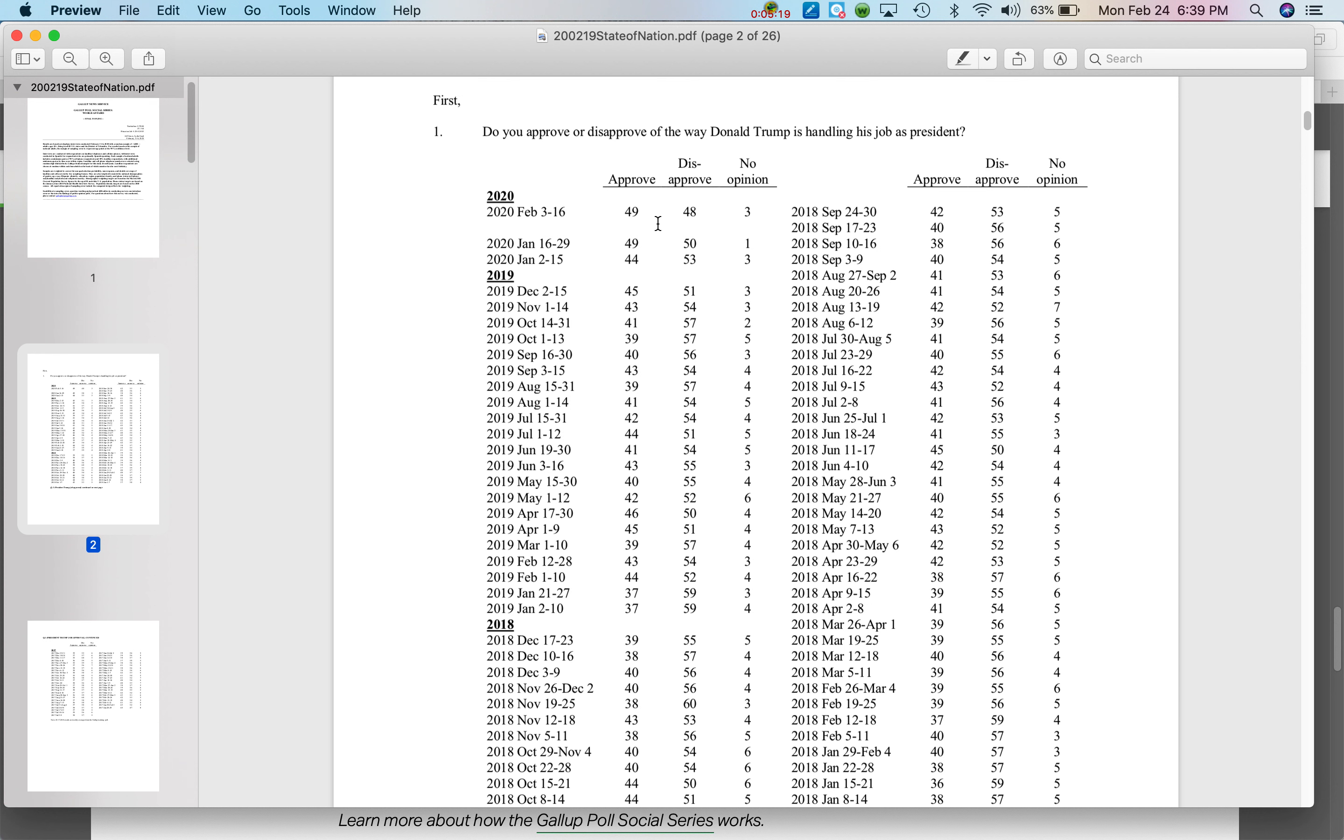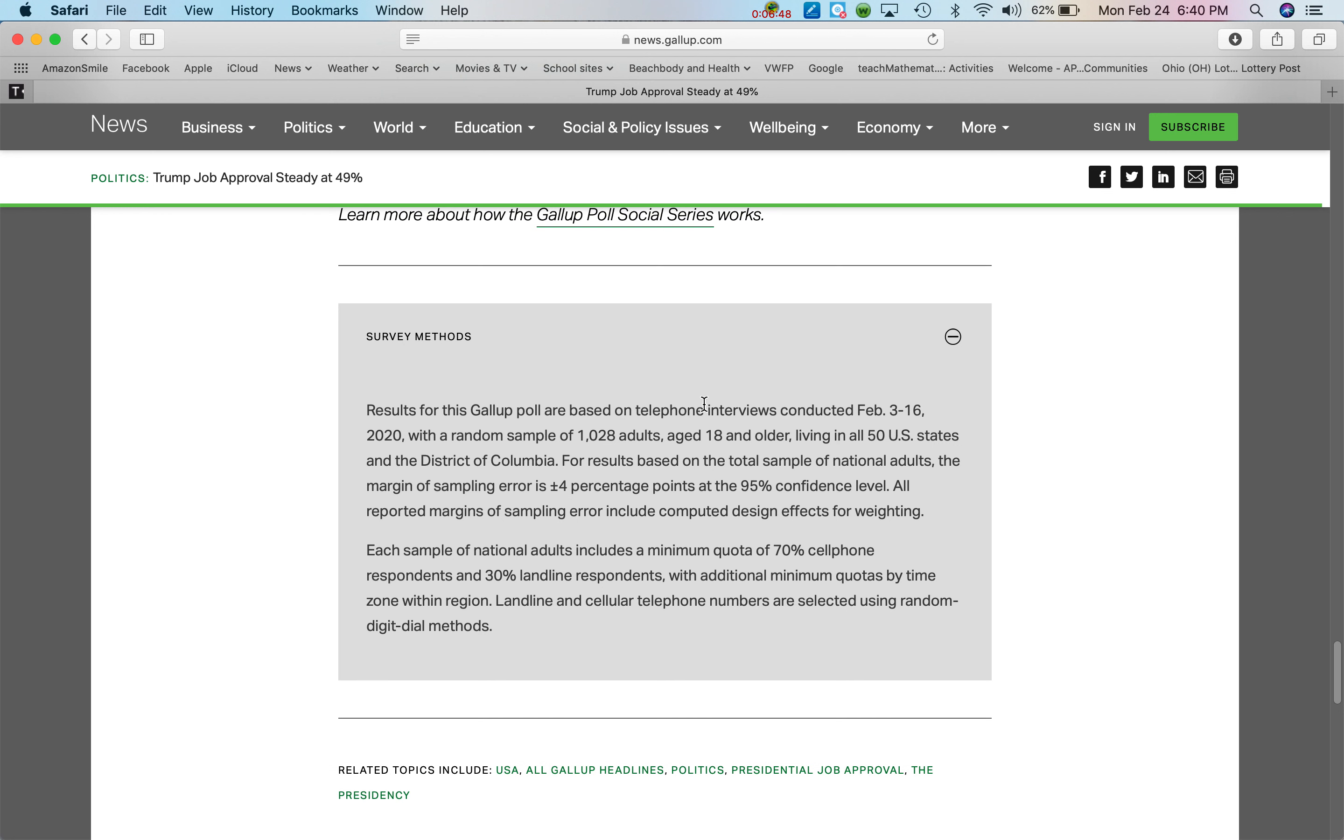But one of the other things that's very important is this part right here that says survey methods. When you click on that, you see where it tells you how they gather their data. Telephone interviews with a random sample, we know that's important, of 1,028 adults age 18 and older living in all 50 US states. Notice here it says there's the margin of sampling error. It's plus or minus 4 percentage points at the 95% confidence level. So we're going to take a look at how we can use something like this to create a confidence interval for the proportion of people who say they approve of President Trump.